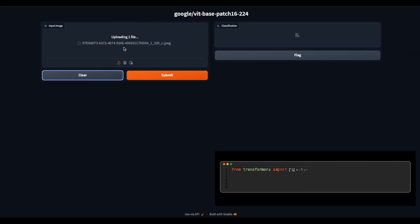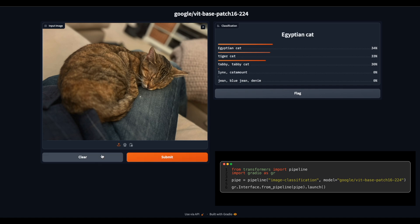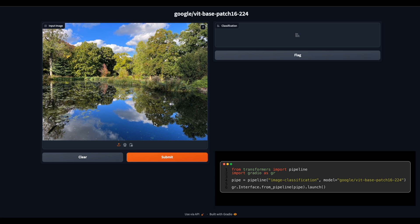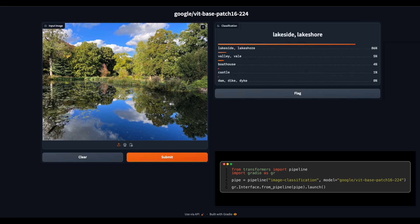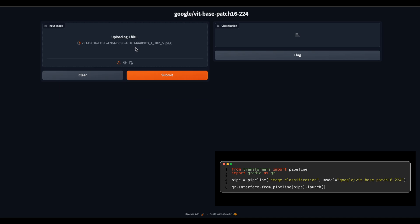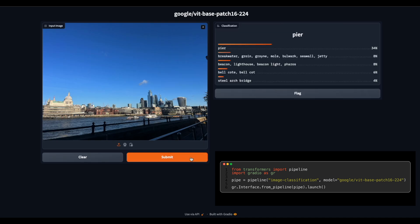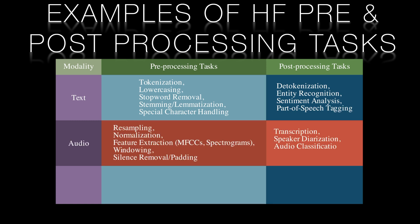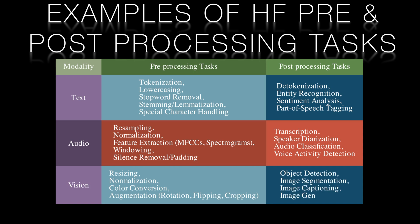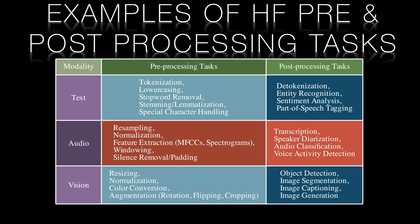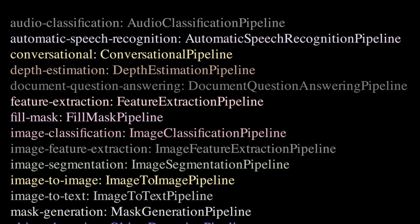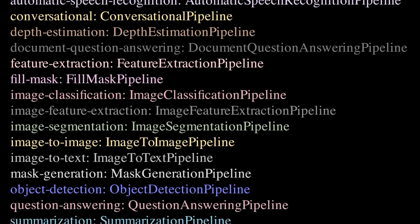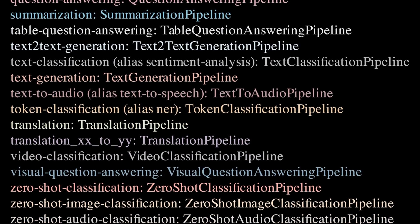All you need to do is supply a pipeline identifier and HuggingFace will provide you with a default model and arrange for all of the necessary pre and post processing of your data. This means in just four lines of code, you can build an image classifier using an existing pre-trained model. Providing a default model, as well as all of the pre and post processing steps, saves a massive amount of time. It means that you can focus on your application rather than get lost in the weeds of tokenization, lower casing, normalization, image resizing or any of the other tasks that take the bulk of the time in AI projects.